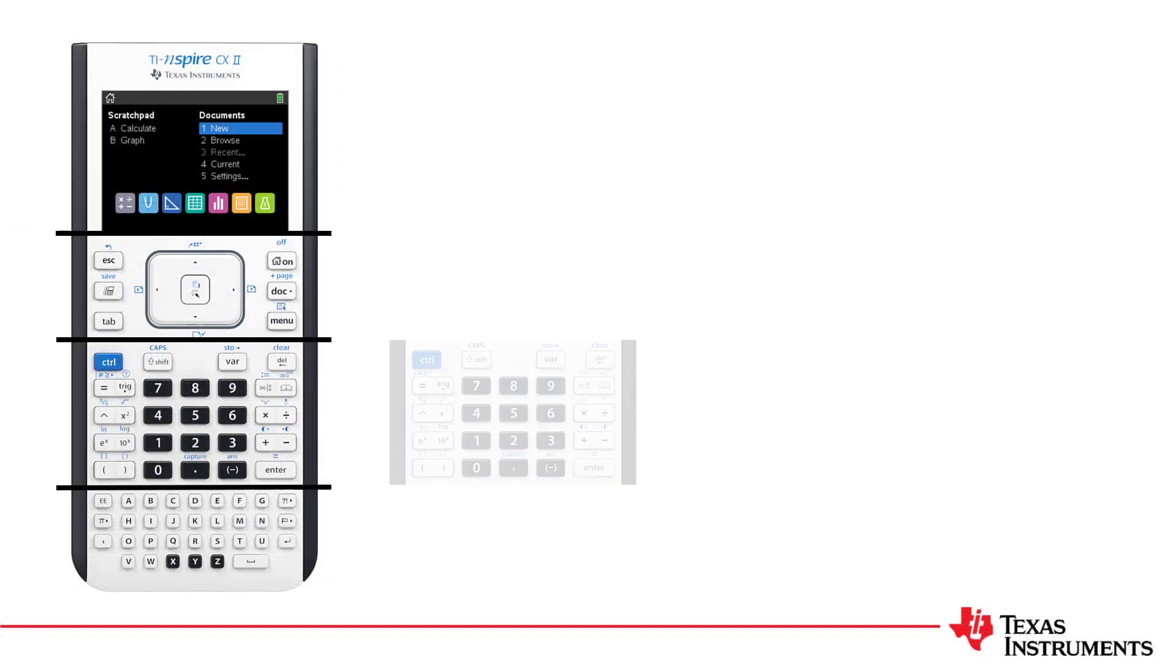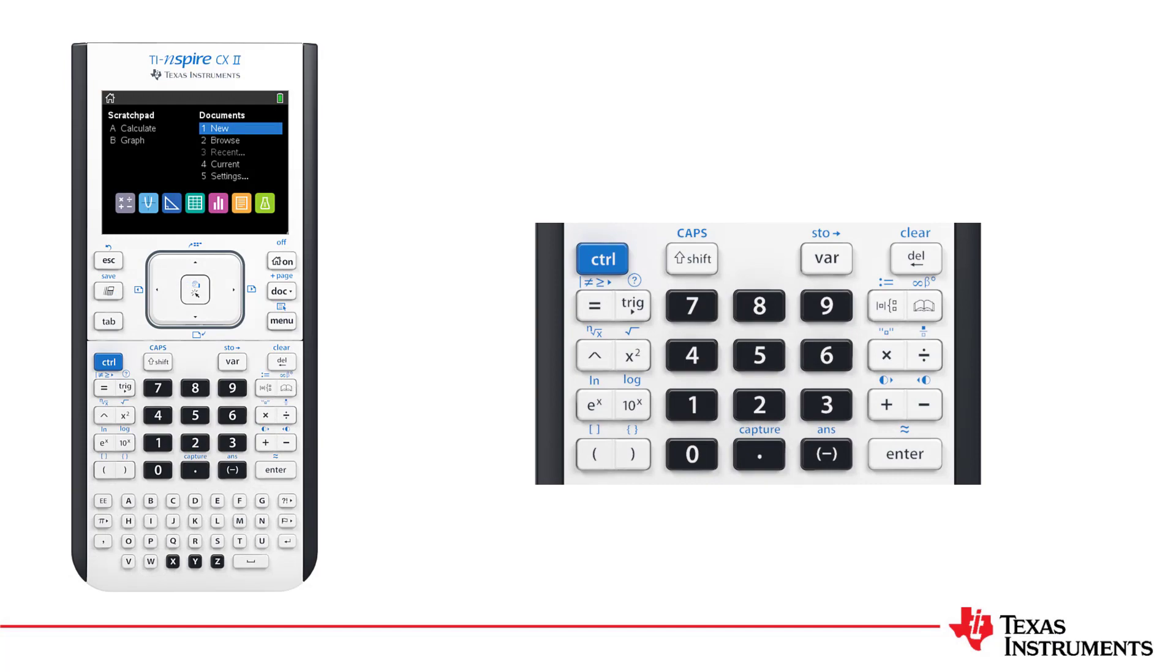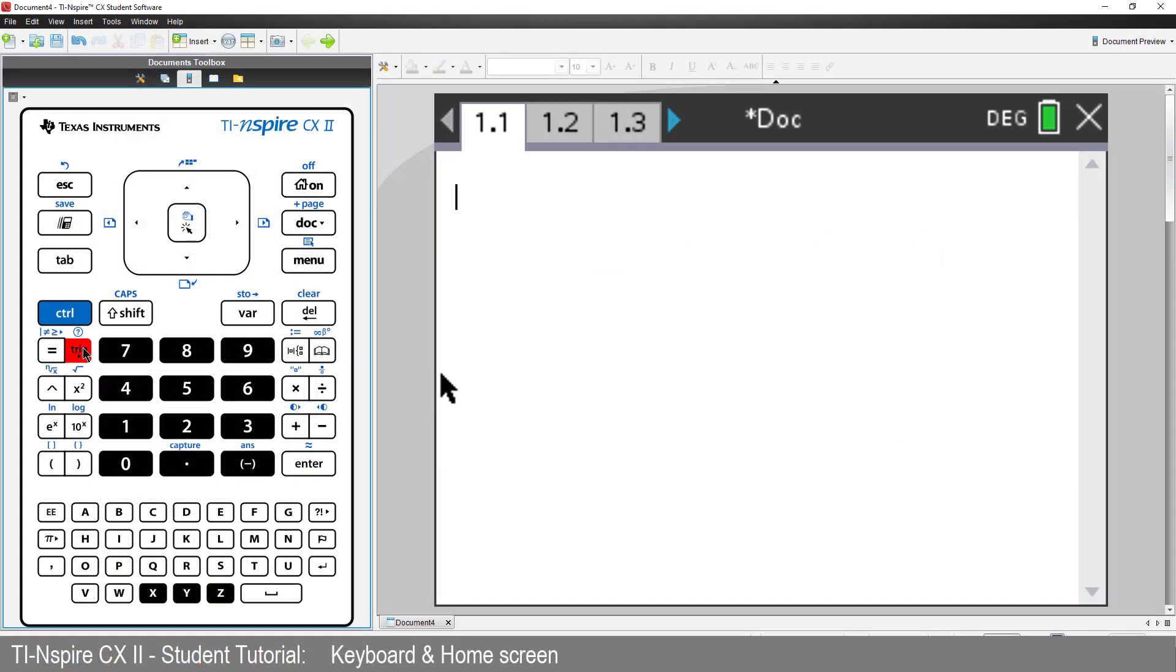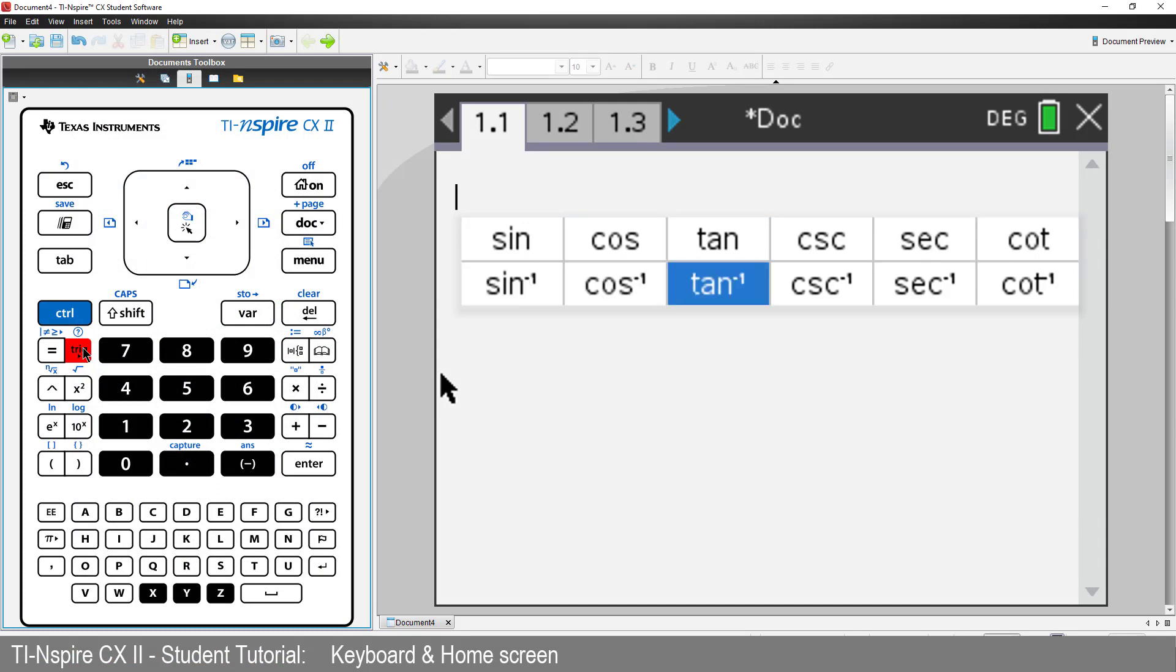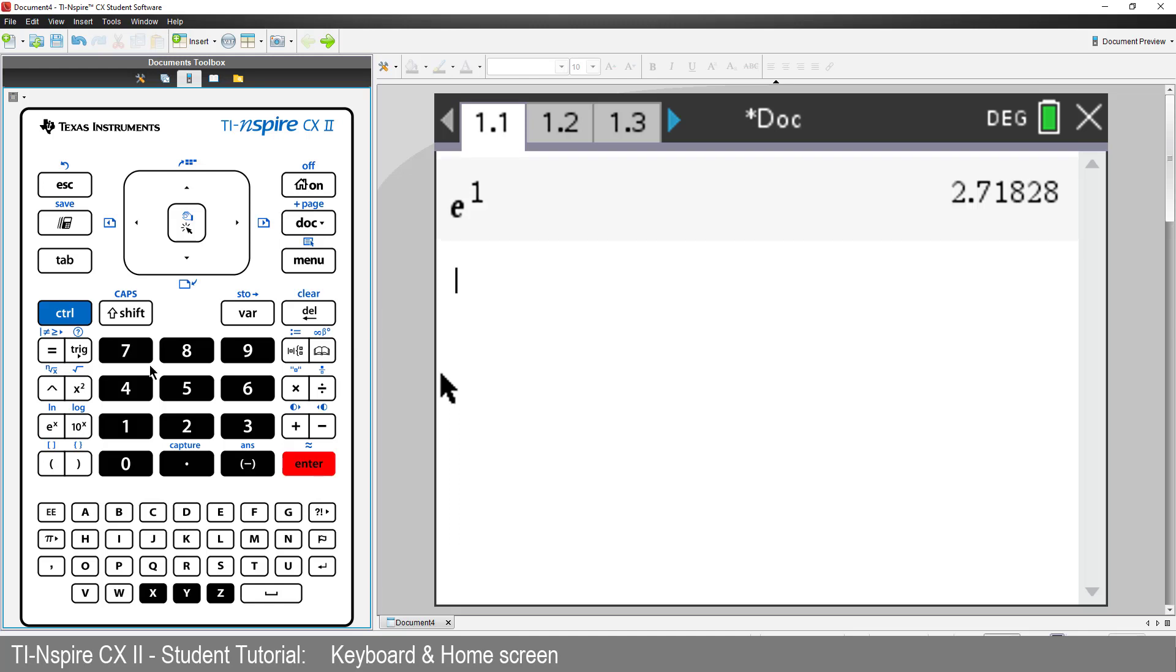The second group of keys contains many of the more familiar features of a scientific calculator. Things like sine, cosine, tan, and all their inverse operations. All of these are accessed from just the trig key. Logarithms, exponentials, brackets, parentheses, fractions, they're all located in this center section of the keyboard.